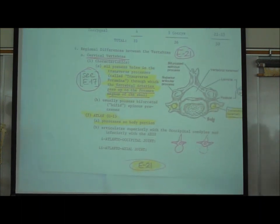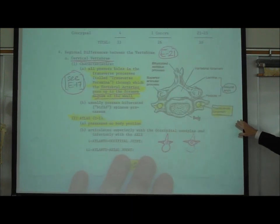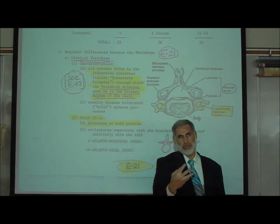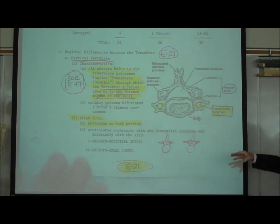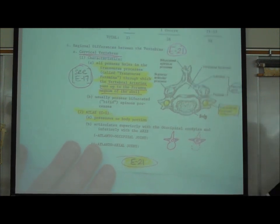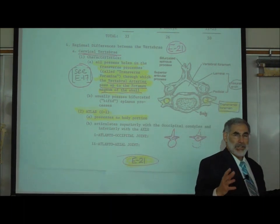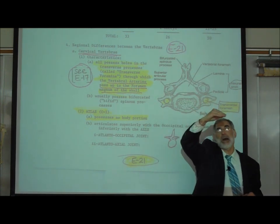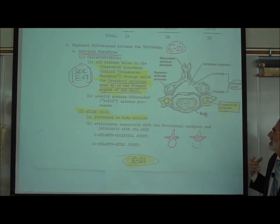There are seven cervical vertebrae, all characterized by having the transverse foramen and transverse processes. Three of the seven are especially noteworthy. The first cervical vertebra is named the atlas — just like the giant who carried the weight of the earth on his shoulders, the top cervical vertebra holds up the skull. The atlas is also very unique in appearance.